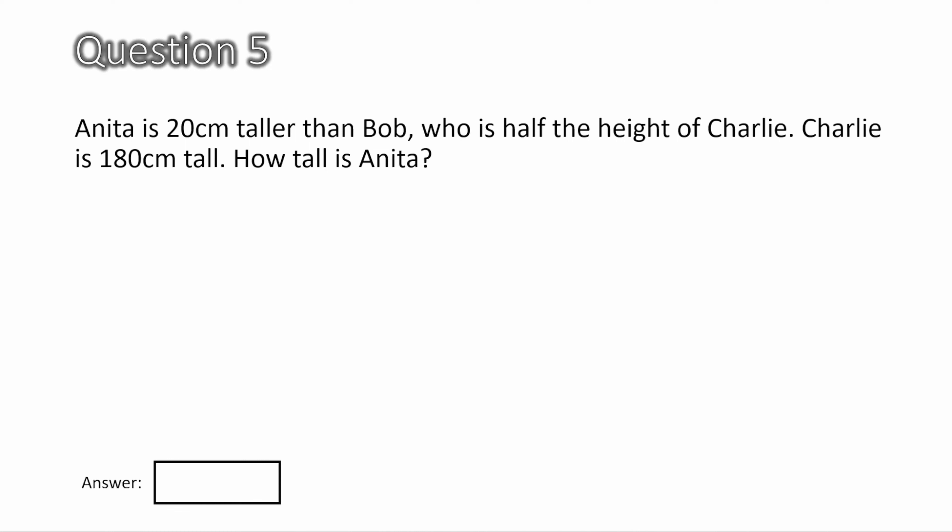Question 5. Anita is 20 centimeters taller than Bob, who is half the height of Charlie. Charlie is 180 centimeters tall. How tall is Anita? Okay, so if Charlie is 180 centimeters tall, let's write that out. So C, short for Charlie, equals 180. Now Bob is half the height of Charlie. So Bob will be 180 divided by 2, which is 90. And Anita is 20 centimeters taller than Bob. So Anita is 90 plus 20, which equals 110 centimeters. So Anita's height is 110 centimeters.